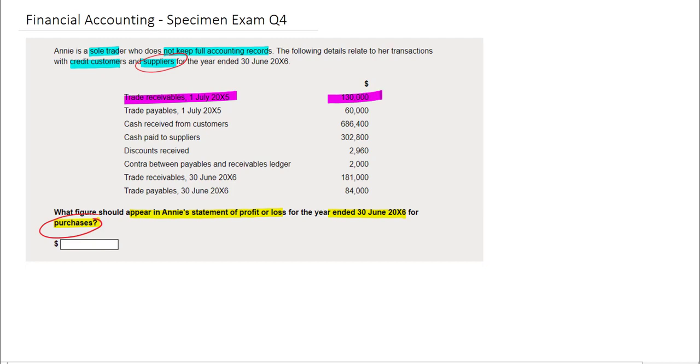What this means is that instantly we can disregard the information about receivables at the start of the year, any cash that's received from customers because that's going to be to do with sales, and information about the receivables at the end of the year. The rest of the information provided in this question is going to be relevant for us in calculating that purchases figure.